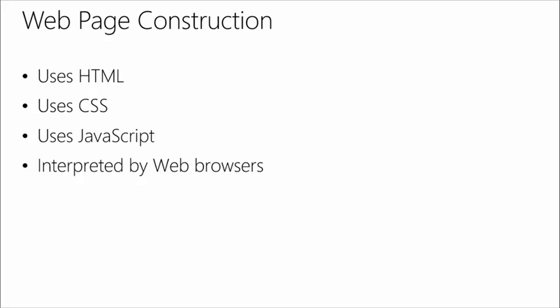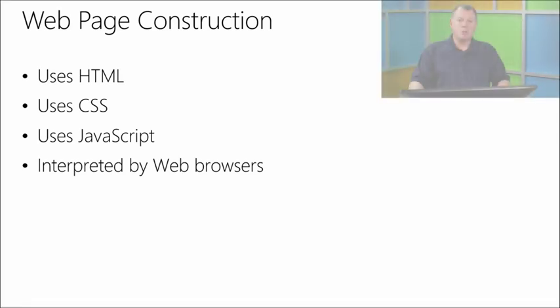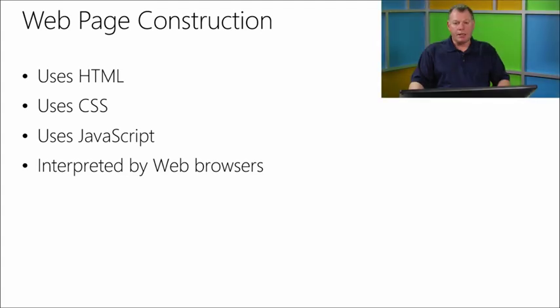With web page construction, especially with the introduction of HTML5 — the latest standard from the World Wide Web Consortium, the group that maintains standards for HTML and web technologies — HTML5 now includes three technologies that complement each other: HTML, or Hypertext Markup Language; CSS, known as Cascading Style Sheets; and JavaScript, which adds functionality to our applications.